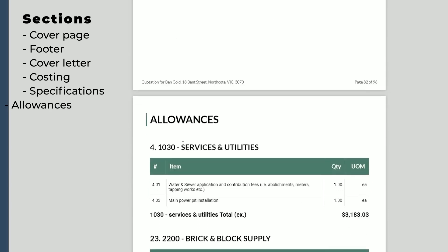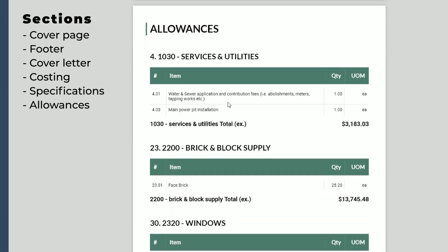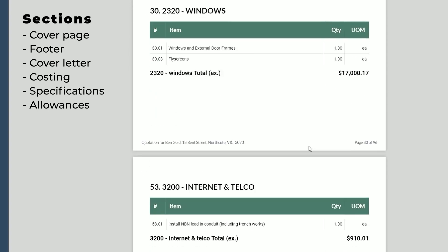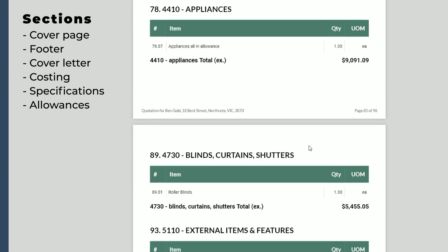Here we've got an allowances section. Wherever you've toggled on an allowance within the costing as either a prime cost, provisional, or general allowance, it'll show in this section. I would usually include these in a quote proposal so the client can see the allowances that have been made and the costings you want to show them.